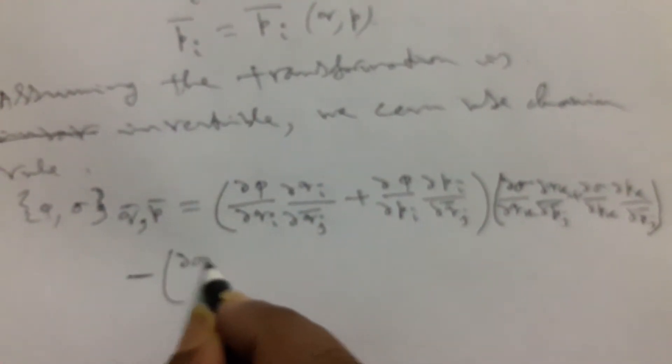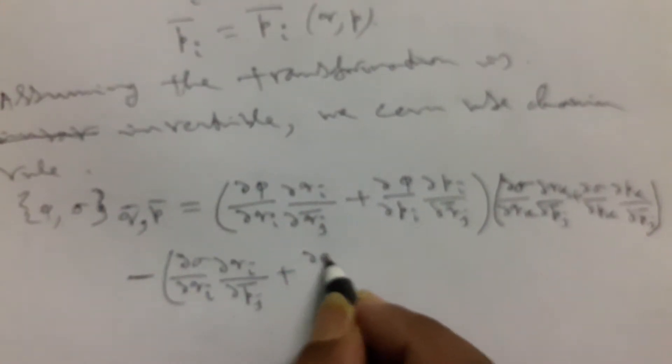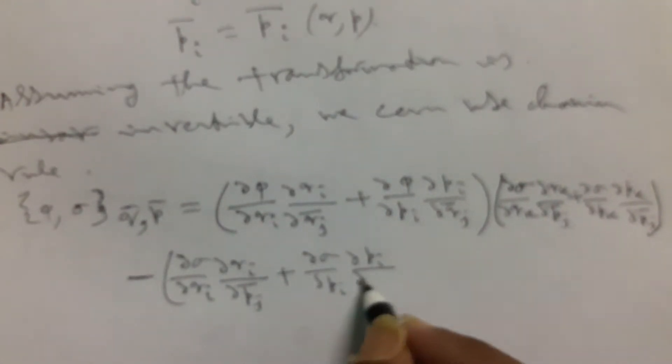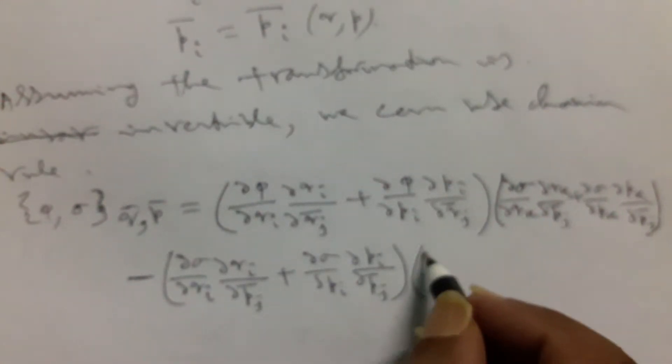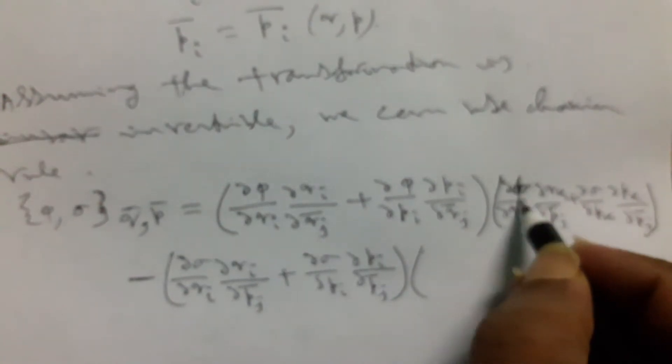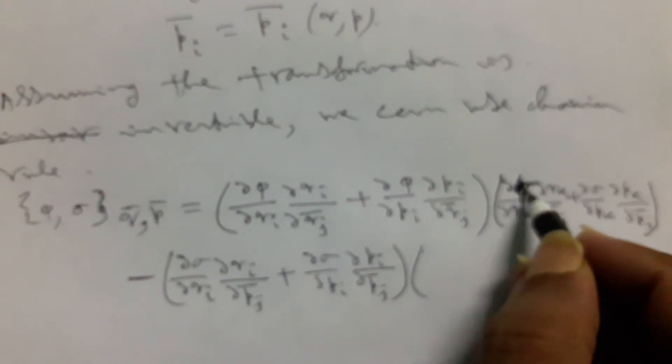Minus (∂σ/∂qᵢ · ∂qᵢ/∂p̄ⱼ plus ∂σ/∂pᵢ · ∂pᵢ/∂p̄ⱼ) into the φ term, and here we write φ and σ respectively.